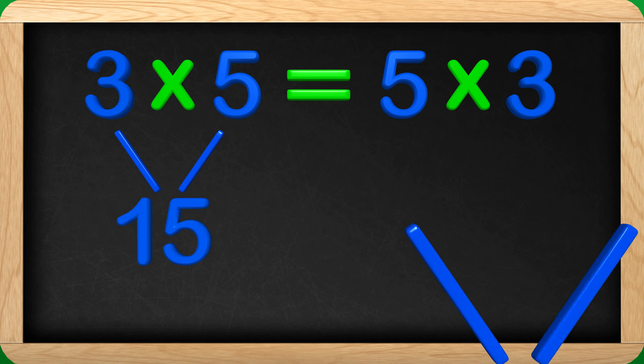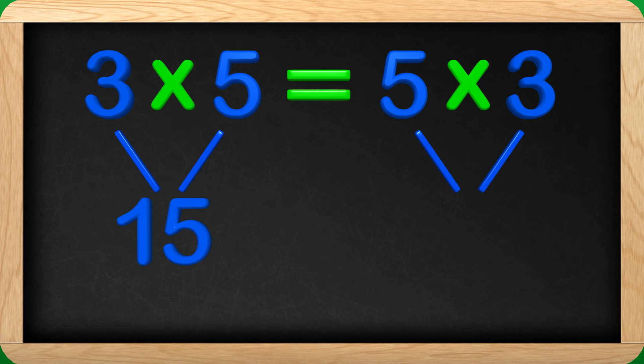Now on to the other side. What is 5 times 3? 15. Great job again! It seemed strange at first because the order of the numbers is changed, but when you multiply it, it comes out to be the same. Pretty cool stuff!